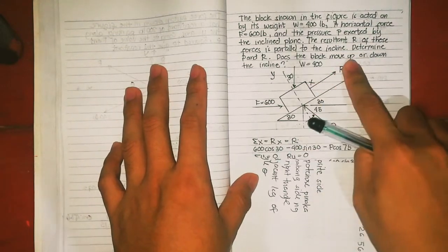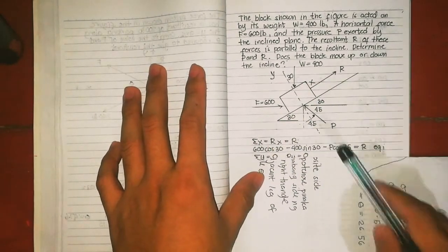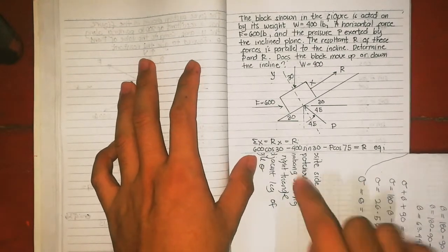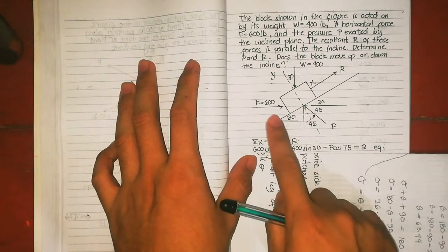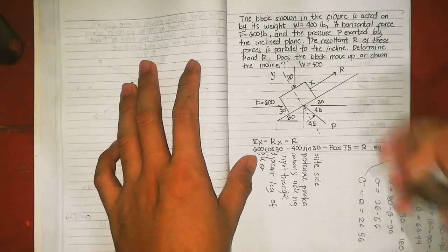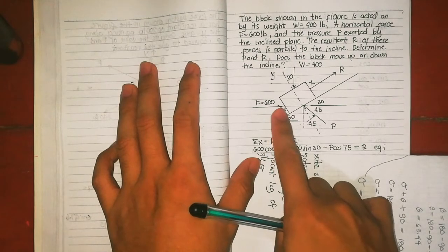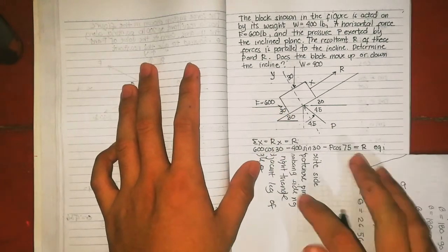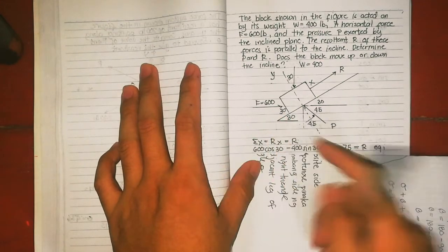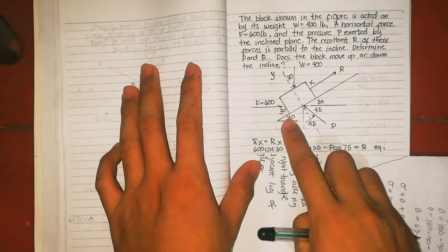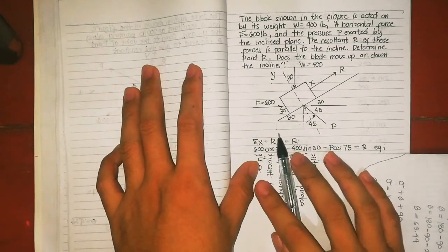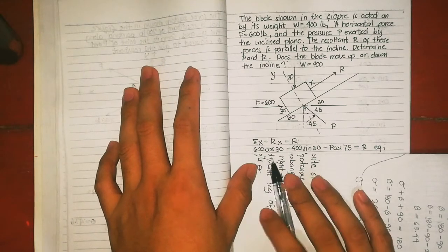Summation of X. If this angle is 30, so alternating angles, this is 30 degrees too. The orientation has the adjacent and hypotenuse of 600. This is cosine, so 600 cos 30.